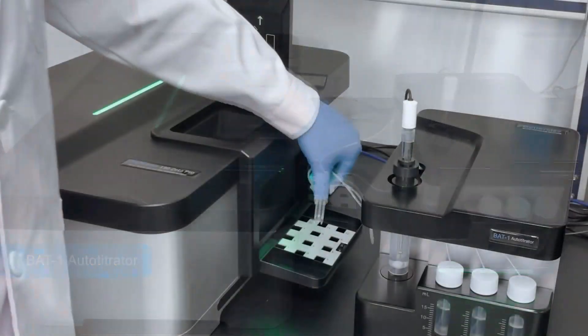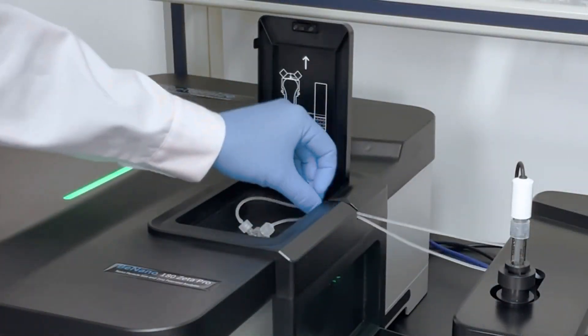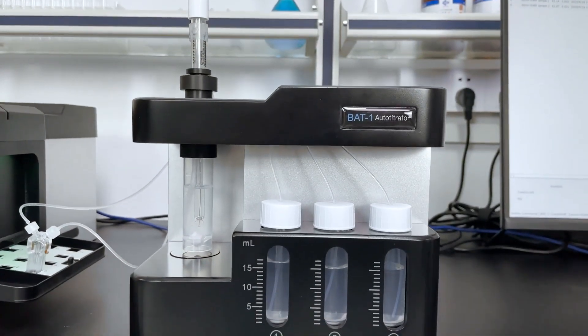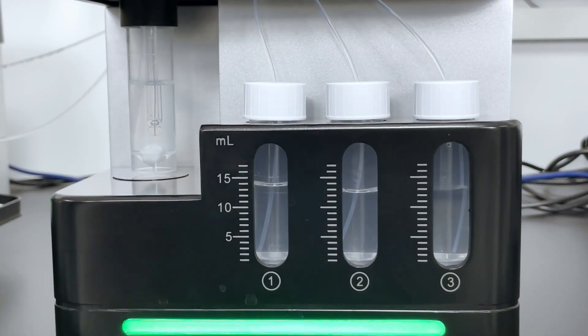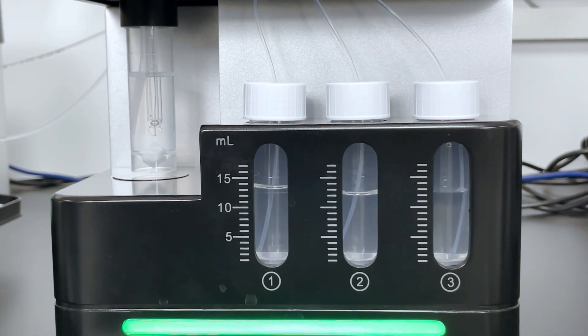For those who want to measure the zeta potential of materials, which depends strongly on environment pH, the B801 auto titrator accessory is an ideal option. It has three high-precision titration pumps which intelligently adjust the titrant selection for optimal efficiency and accuracy.